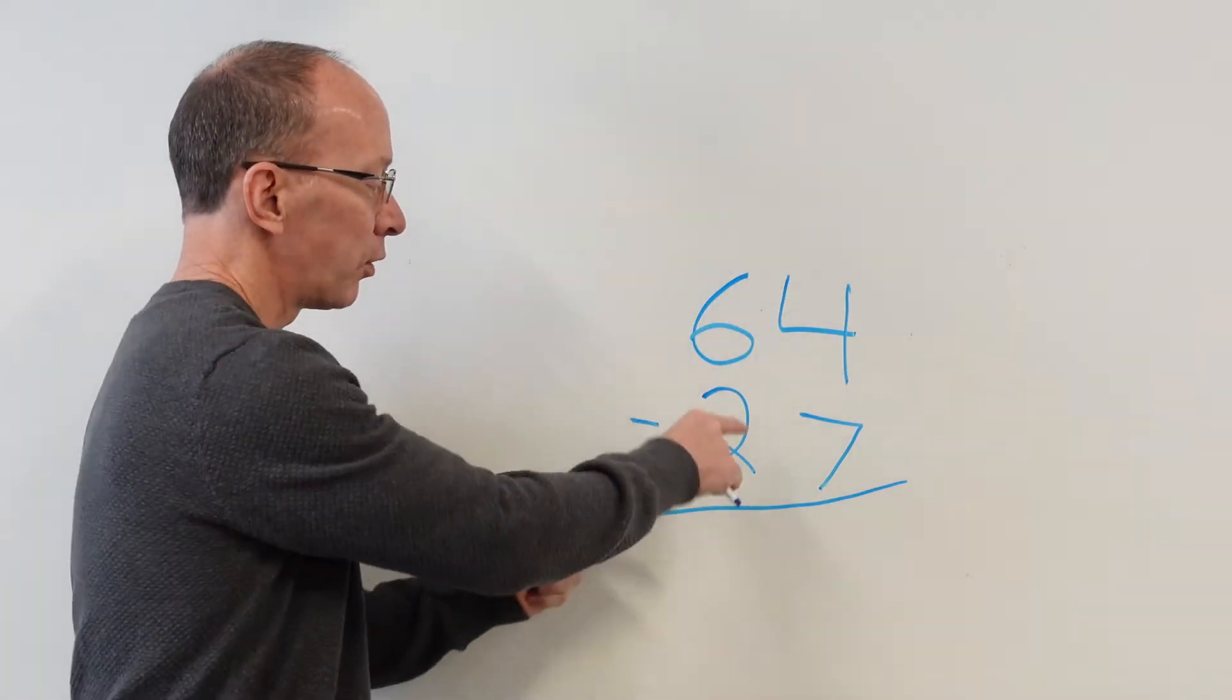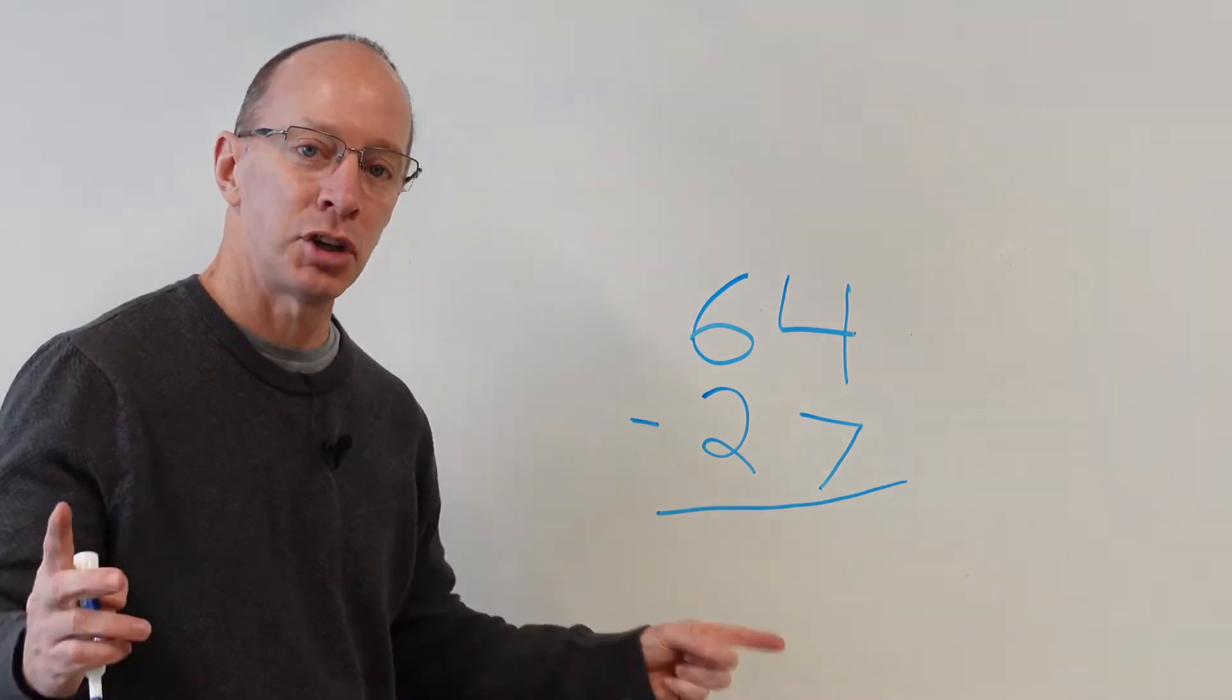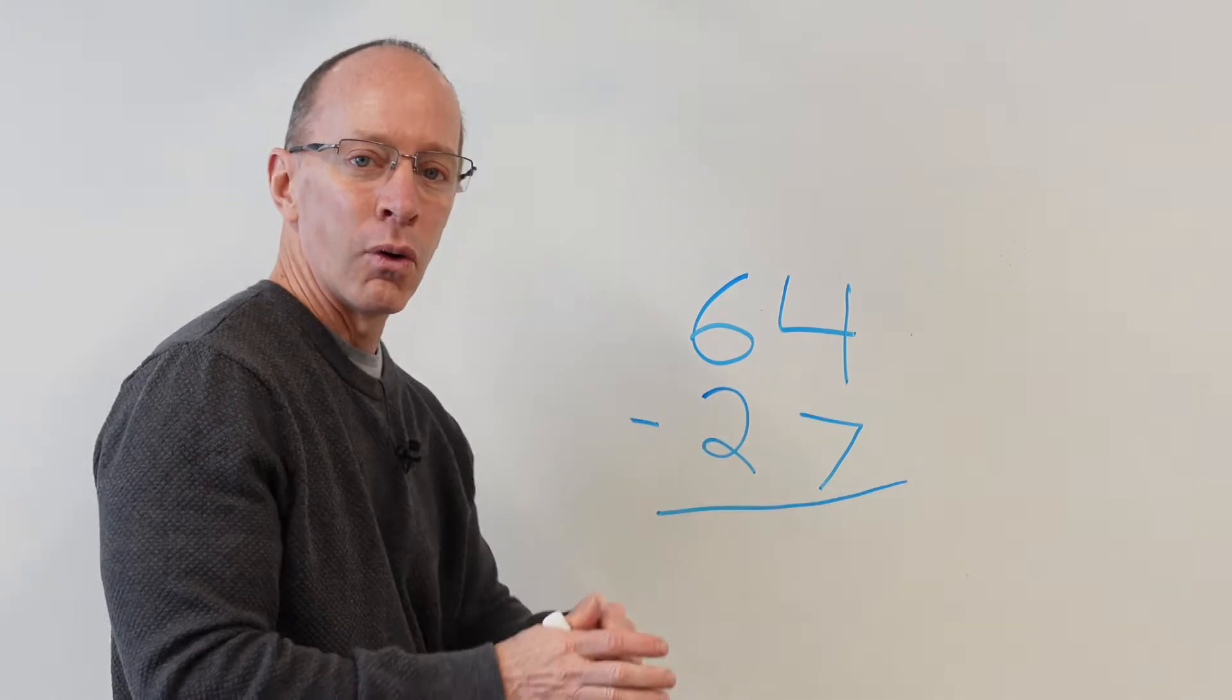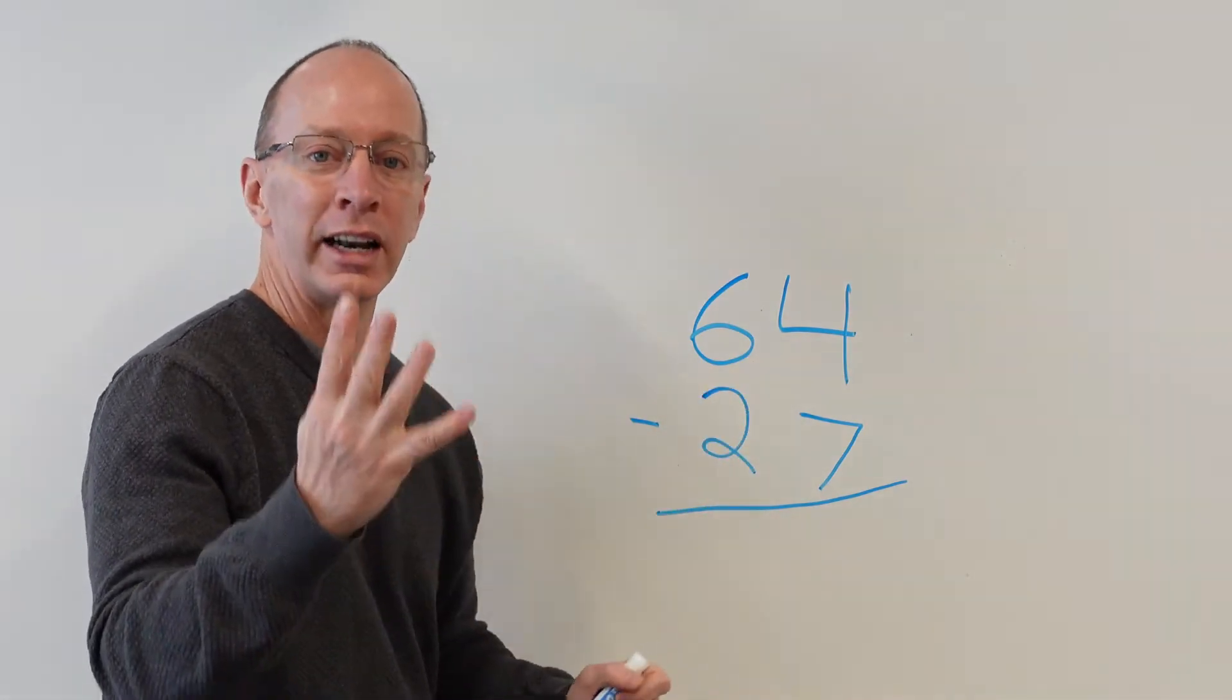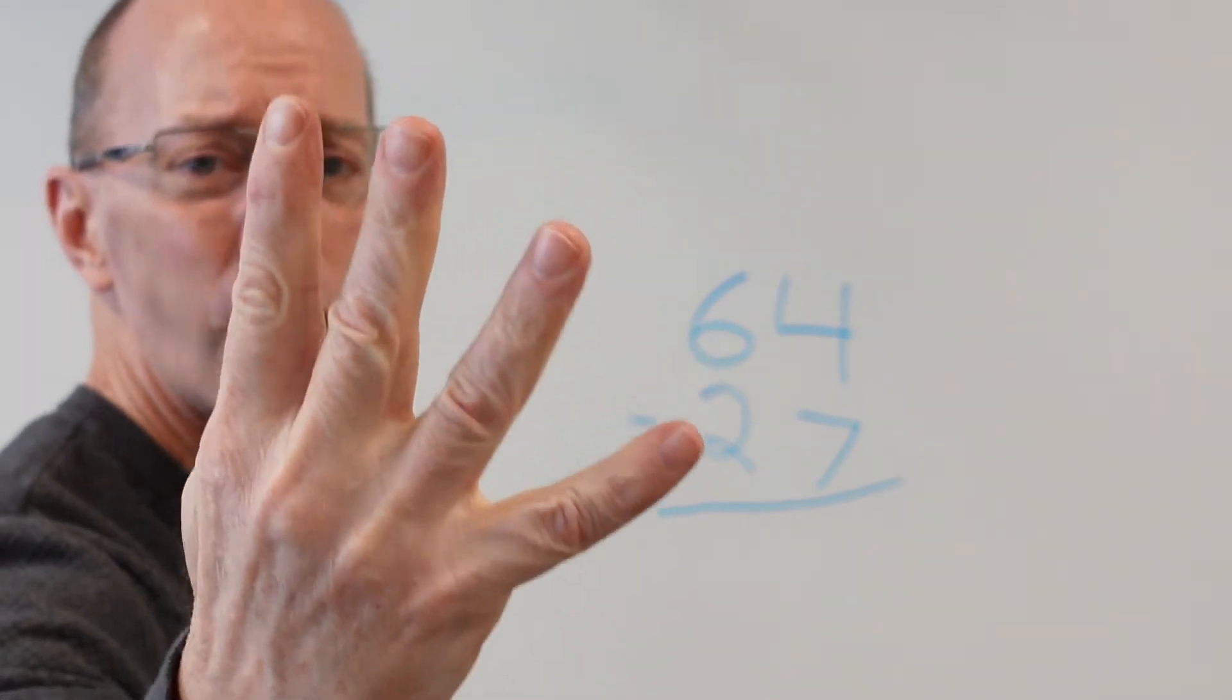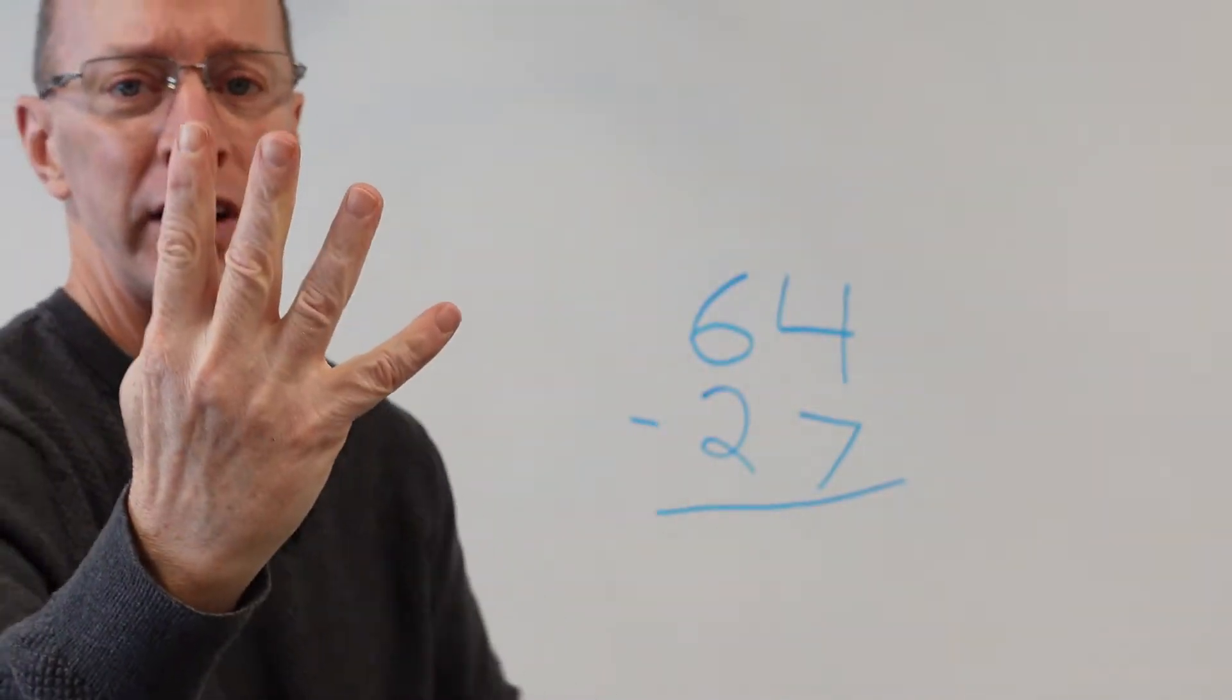So I'm going to put 27 right here and then the line that goes underneath it with a minus sign. I'm going to erase that so that we can concentrate now on this problem here. Sixty-four minus 27. Step one. Subtract the ones. Whoa. I got four. I got four right here. This is four and I want to take seven away. Can I do it? No, because I only got four fingers. I don't have seven fingers.